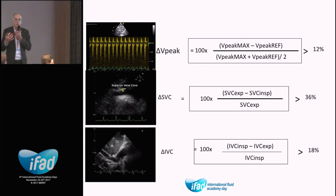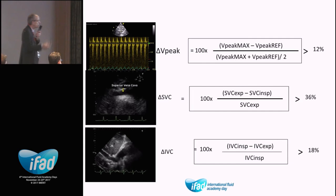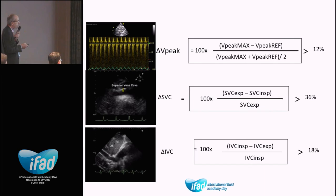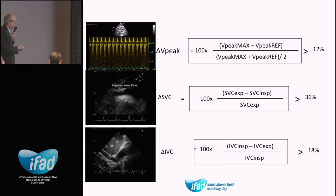For preload assessment, you can look at variation of the outflow across the aortic valve in mechanically ventilated patients. With transoesophageal echo you can assess superior caval vein variation — the SVC is compressed during inspiration as intrathoracic pressure increases. You can also look at variation of the inferior caval vein at the level of the ribs, which dilates during inspiration because it is external to the thorax.